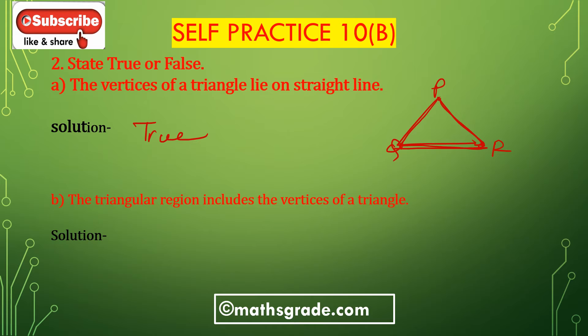Bit B: The triangular region includes the vertices of a triangle. This is also true. This is the triangular region, and the vertices P, Q, R lie on the triangular region. This is true.